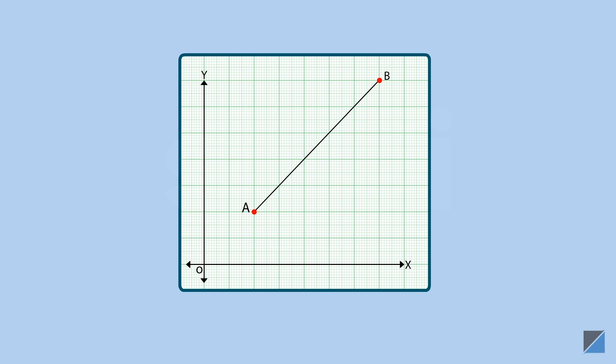Let's take the coordinates of A as (x₁, y₁) and the coordinates of B as (x₂, y₂) respectively. Assume point P to be the point at which the sapling needs to be planted. Let m₁ and m₂ represent the ratio between the sapling and the ends of the poles. As the coordinates of point P are not known, let's take its coordinates as x and y.